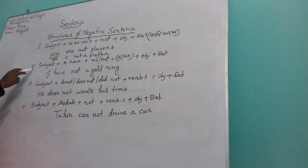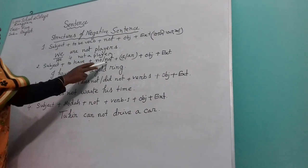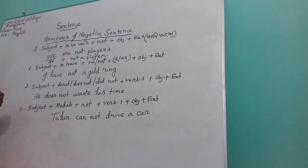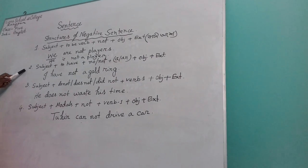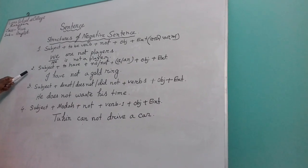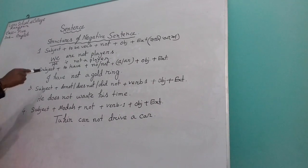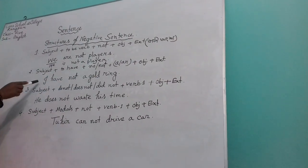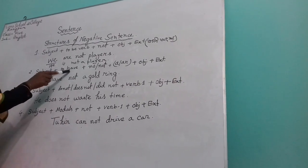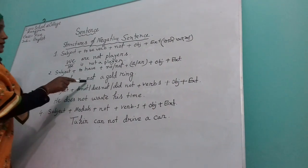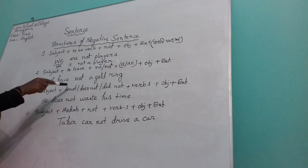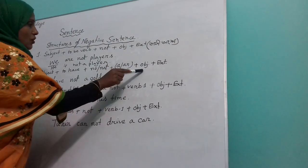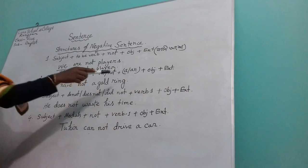Next, see structure 2. This is another structure you have to learn and memorize. Here we can discuss one example: 'I have not a gold ring.' The structure is: Subject + have/has + not + object + extension. Here you can use 'no' or 'not'. Then comes 'a gold ring', which is the object. There is no extension here — extension is optional.